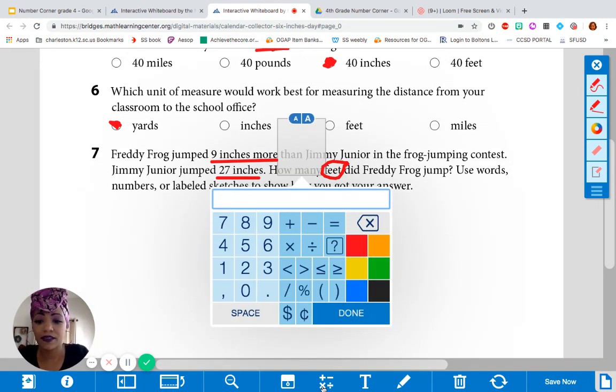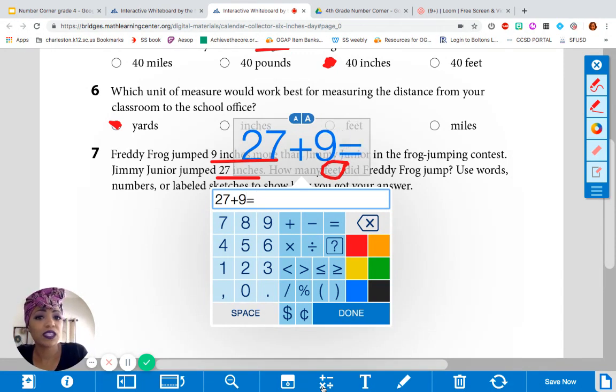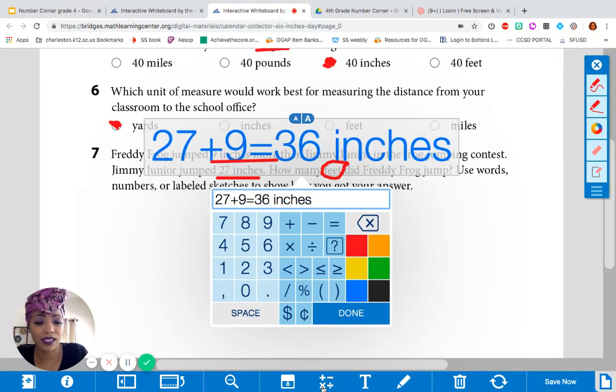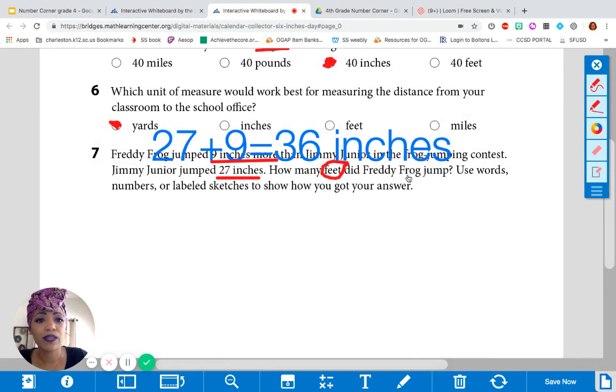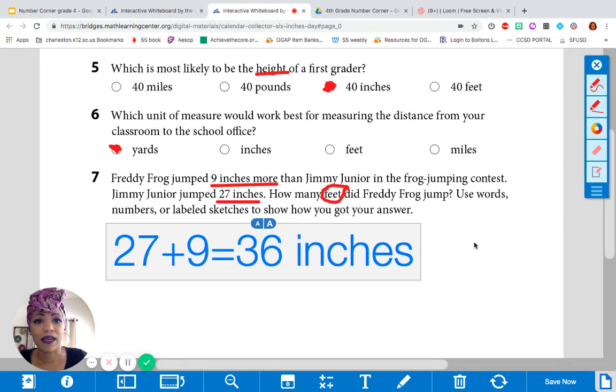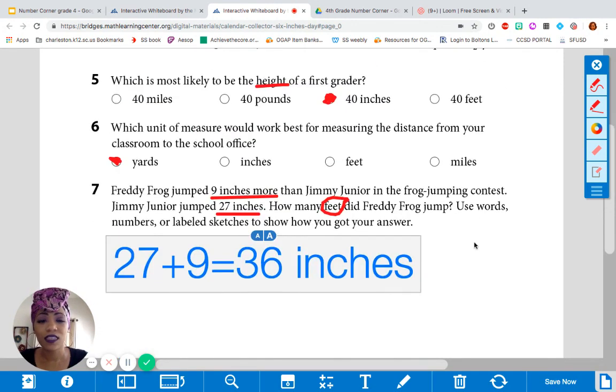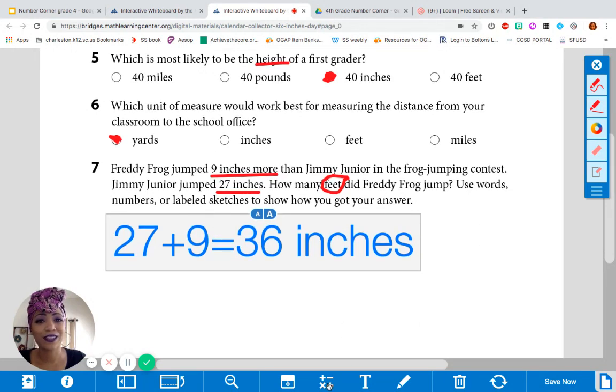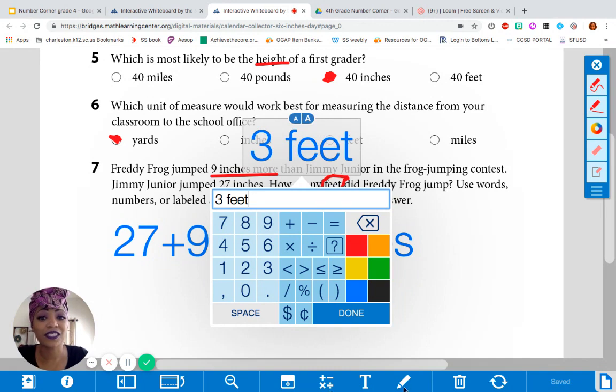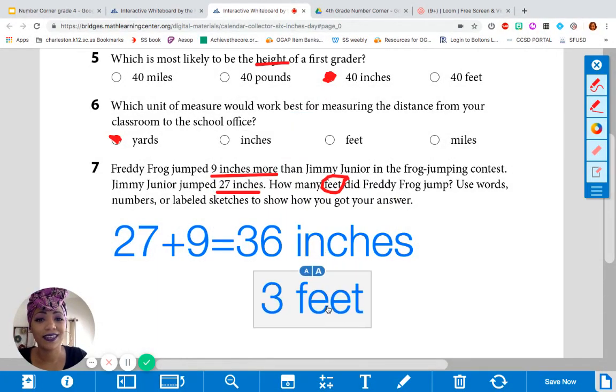So, the first step is 27 plus 9 inches, because he jumped 9 inches more. Which equals what? Right. 36. So, he jumped 36 inches. Let's use what we did earlier to figure out how many feet that might be. Well. Right. There are 36 inches in a yard. But we want to know how many feet. Good. Did you say three feet? You're right. It is three feet. Because there are 36 inches in three feet. Good job.